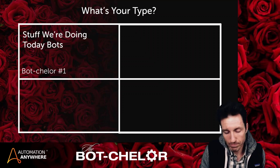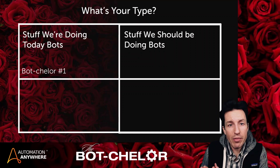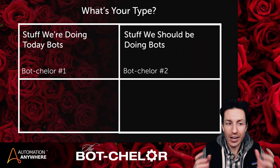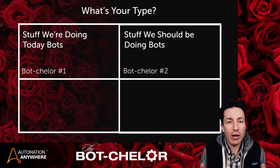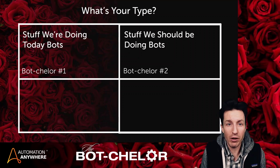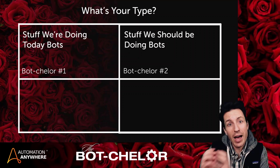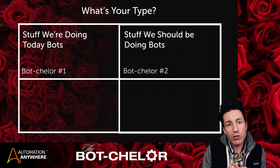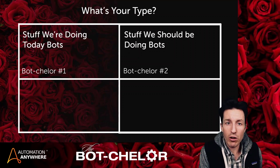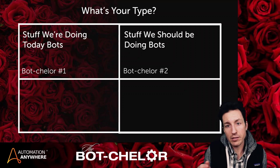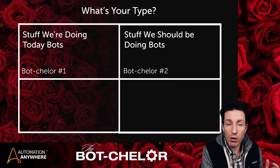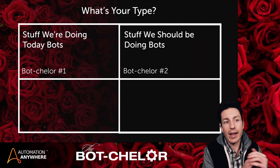The next type is the 'stuff we should be doing' bots. These are tasks that we should be doing but aren't. At an organizational level, that can look like running long-running reports more frequently. If a bot is able to start a long-running report at 2 a.m., it can be done by 8 a.m., so that leaders arrive and have that report ready — rather than someone having to queue it up and spend their entire day running it.